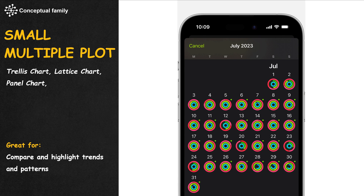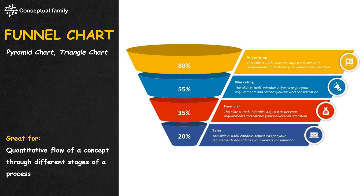A small multiple plot, or trellis chart, is a series of similar graphs or charts using the same scale and axes, placed nicely on a grid together to compare and highlight trends and patterns. A funnel or pyramid chart is used to visualize the quantitative flow of a concept through different stages of a process.